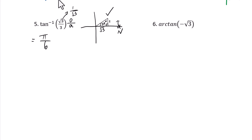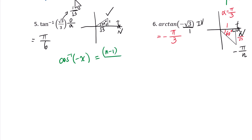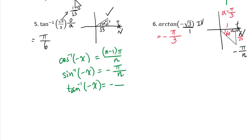Question 6: arc tangent of negative square root of 3. Since this is negative, the answer is in the fourth quadrant. The pattern in the fourth quadrant is negative pi over n. With side lengths negative square root of 3 and 1, the reference angle is 60 degrees, which is pi over 3. Therefore the fourth quadrant answer is negative pi over 3. For the inverse of negative x: if it's a special angle, inverse cosine gives (n minus 1) pi over n, and inverse tangent gives negative pi over n, where n equals 3, 4, or 6.